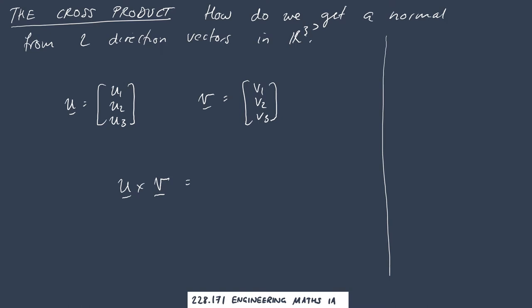To calculate the cross product between vectors u and v, you need to first write the vectors down side by side like this. It's not the only way of doing it but it's an easy way to remember the formula.